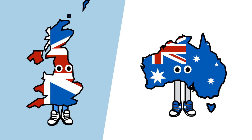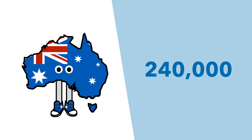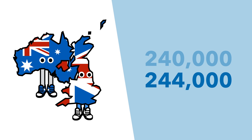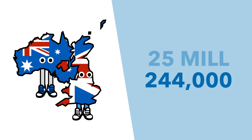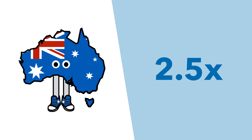The main way that the current Australian system actually differs from the UK's is in its scope. Australia has a net migration of about 240,000 people a year, which is about the same as the UK in 2016, which welcomed about 244,000 new migrants. However, Australia has a population of about 25 million whereas the UK has about 68 million, which means that per capita Australia takes in about 2.5 times more migrants than the UK.